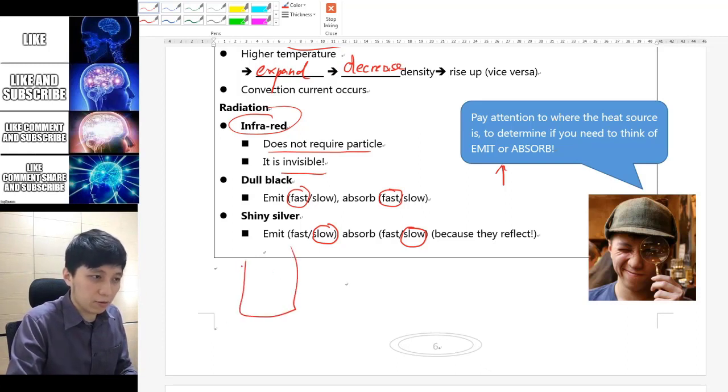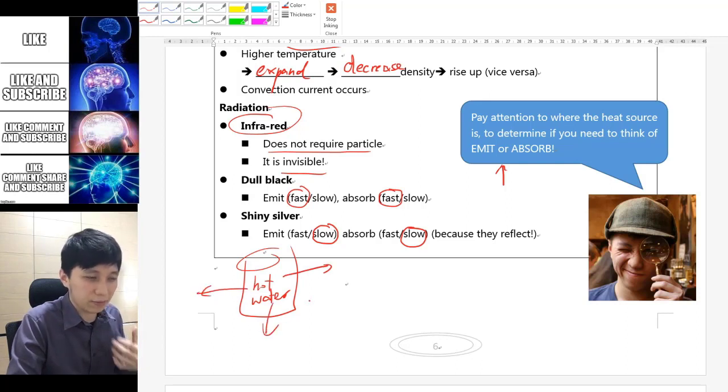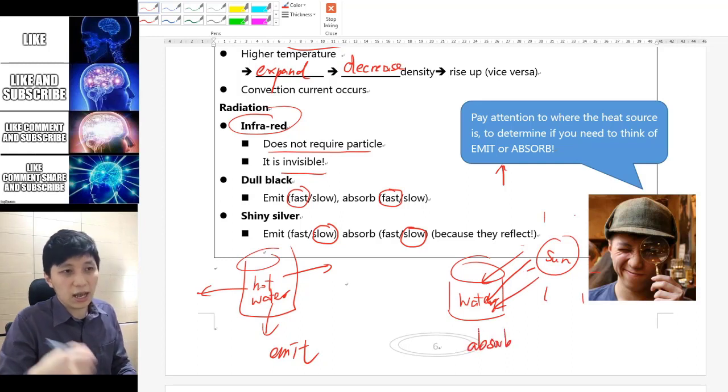So for example, earlier we talked about if you have a can and inside there is hot water, what happens is they are going to emit the radiation out from the can, so this is emit. Well, if you have simply some water and maybe there is sun or any sort of heater nearby and those infrared will try to go inside the can, in this situation you will consider absorbing.